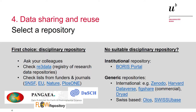A third possibility are the so-called generic repositories. Generic repositories do not specialize in a particular discipline but allow the publication of data from all research fields. This has the advantage that data from interdisciplinary projects can be stored in one place. In terms of generic repositories, there are two Swiss solutions: OLOS and Swissubase. In addition, there are numerous international repositories that can also be used by researchers from Switzerland. The best known of these are Zenodo, which is funded by the European Commission, Harvard Dataverse, Figshare and Dryad.